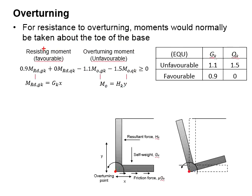Within the favorable resisting moment, there are GK and QK. Also, within the overturning moment, there are GK and QK.